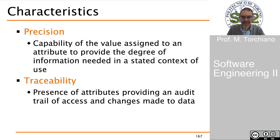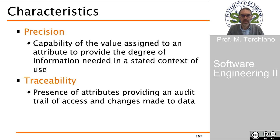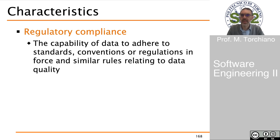Precision is the capability of the data to provide a sufficient degree of information for the intended users. Traceability is the presence of attributes that allow us to check the origin of the data and follow the trail of how data has been acquired, processed, and stored. Regulatory compliance is the capability of the data to be consistent with standards or conventions used in a system, so that we can check that all the data have good quality.